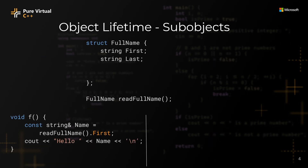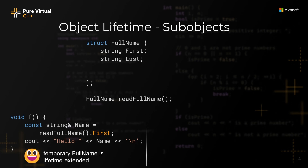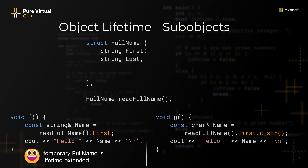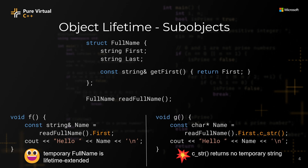Let's talk about how lifetime extension interacts with sub-objects. If I bind the reference to a field of a temporary object, the whole object will be lifetime extended, so the function on the left is safe. On the other hand, if I call a method on the temporary object, lifetime extension will not happen, so in this case, name will dangle, and the function on the right will have a use-after-free error. Similarly, if I introduce a getter like getFirst, the returned reference will not extend the lifetime of the temporary, so similar to the method case, it can introduce dangling.